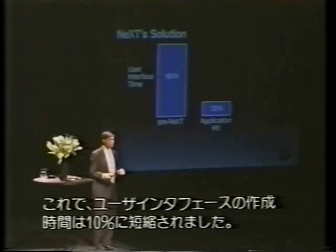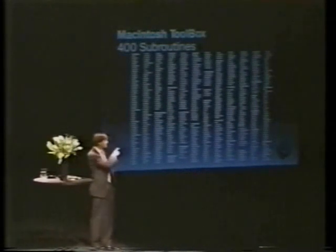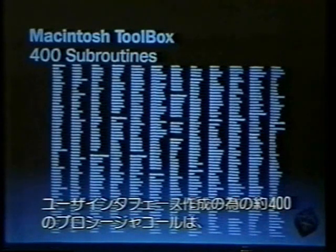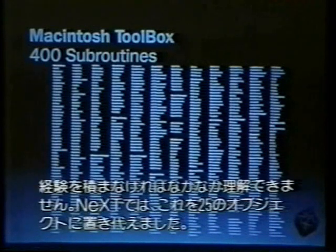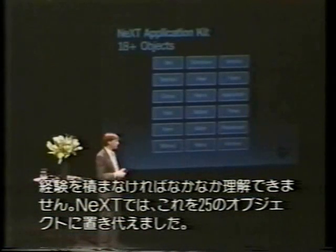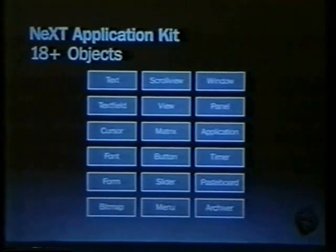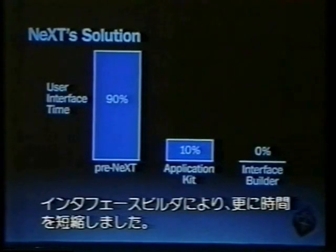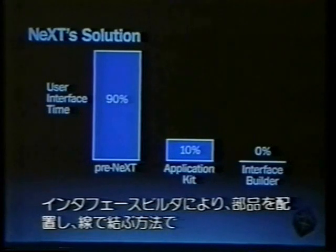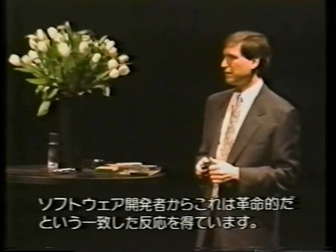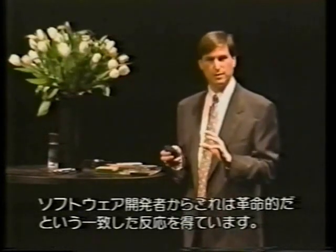But then we went further. We wrote a program that runs on top of the application kit called Interface Builder. In a Macintosh, which I love, there are about 400 procedure calls to do the user interface, and if you're an expert over time you get very good at knowing what they are. We've replaced this — it's actually up to about 25 objects now. That's all you have to know to program this system. But we reduced it even further. This program called Interface Builder lets us graphically lay out the user interface and connect things with lines. And we can actually get the time to build a user interface down to close to zero. And we have gotten unanimous feedback from the software developers that this is revolutionary.